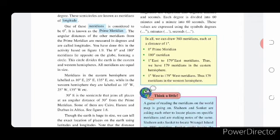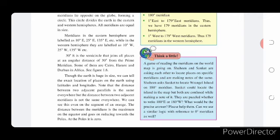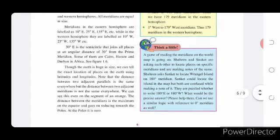Meridians in the eastern hemisphere are labeled as 10 degrees east, 25 degrees east, 135 degrees east, etc. While in the western hemisphere they are labeled as 10 degrees west, 25 degrees west, 135 degrees west, etc. 30 degrees east is a semicircle that joins all places at an angular distance of 30 degrees from the prime meridian. Some of them are Cairo, Harare and Durban in Africa. See figure 1.6.